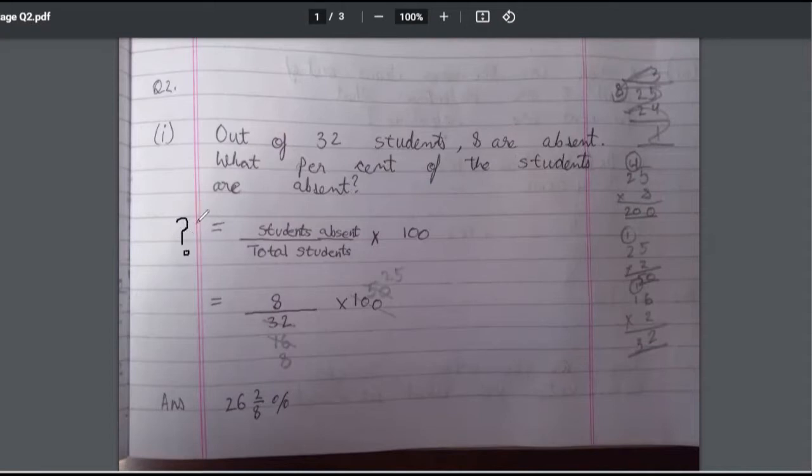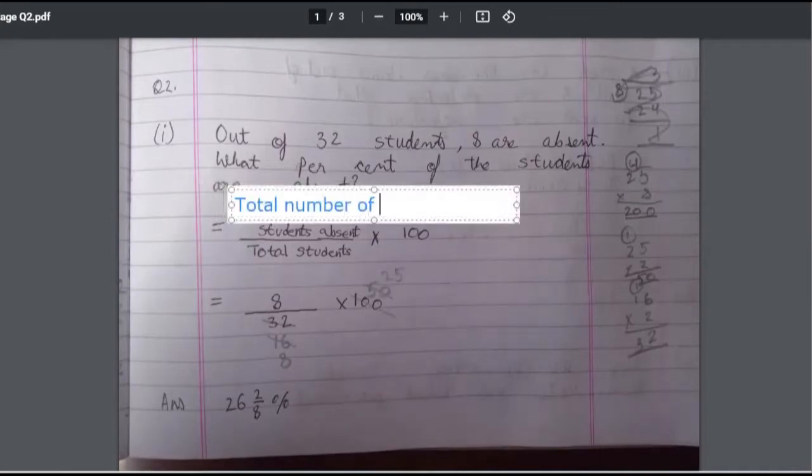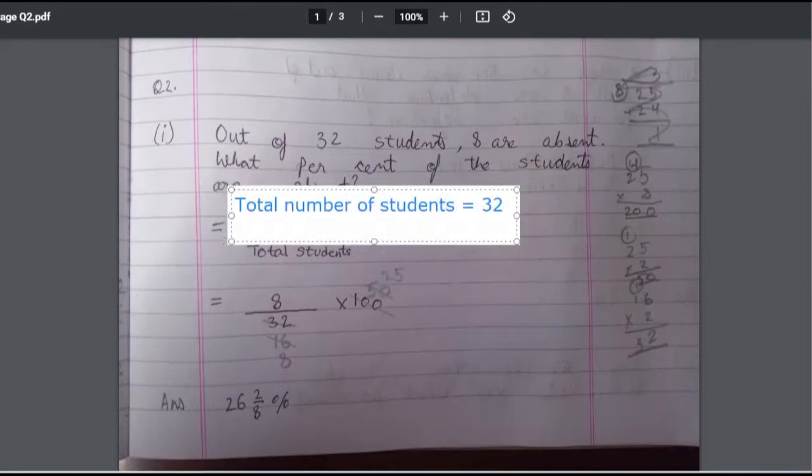What are you finding? You should write it first. Before even starting the question, you should write some statements. Number of students equals 32. Number of students absent equals 8. Is this thing clear?